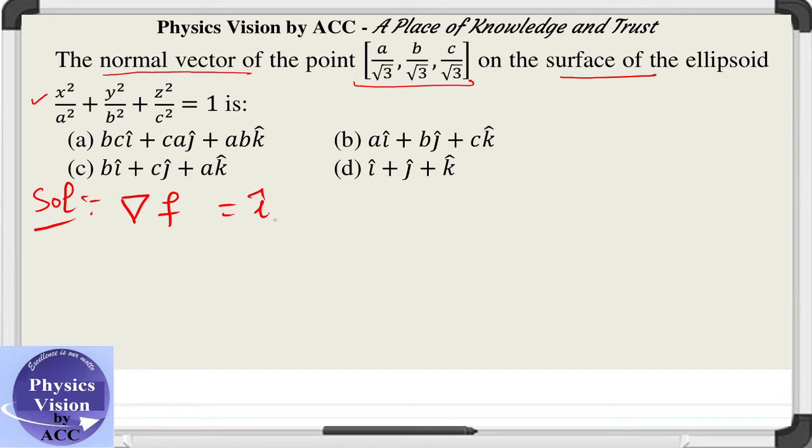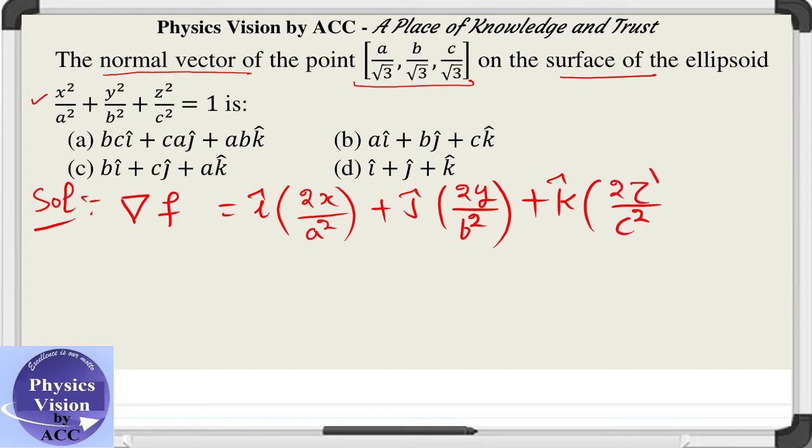We will get i cap, and then the derivative of the first term, that is 2x upon a squared with respect to x. Then we have plus j cap, the derivative with respect to y, plus k cap, the derivative with respect to z. This is the gradient.